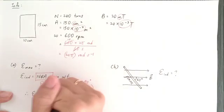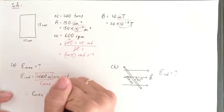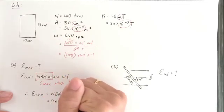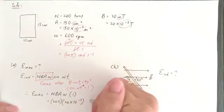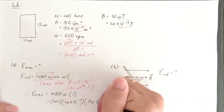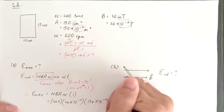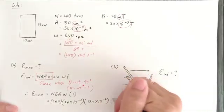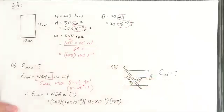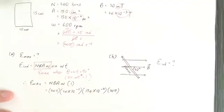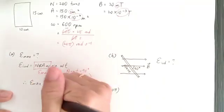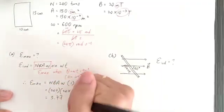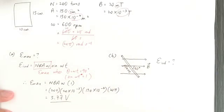So just substitute all the information given. Number of turns 200. Magnetic field strength is 20 times negative 3. Area is 150 times negative 4. And then omega is 20 pi. That's it. And so finally our answer we will get 3.77 volts. That's our answer.